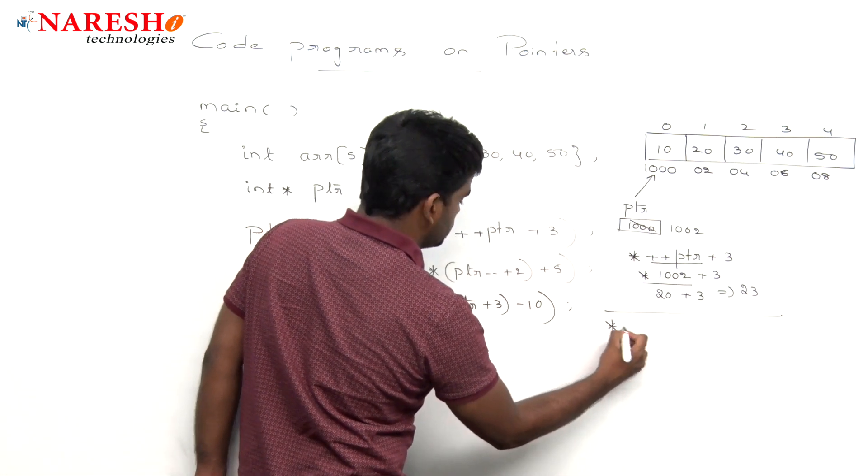Here it is now 1002 plus 2. It is increased by 2. It is nothing but 1004 and 1006. Pointer to 1006 plus 5. Pointer to 1006 is 40. So 40 plus 5 is 45. That is the next value. First one value is 23, next value is 45.